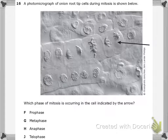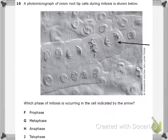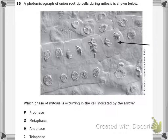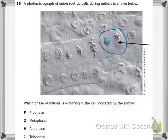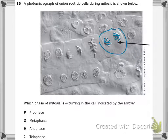Number 16 states: a photomicrograph of onion root-tip cells during mitosis is shown below. Which phase of mitosis is occurring in the cell indicated by the arrow? The cell we are looking at is this one right here, and these bits we see inside the cell — the ones I'm highlighting in blue — those are the chromosomes. So what we need to know is which phase of mitosis is going on right there.